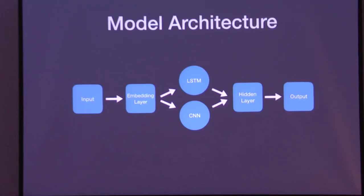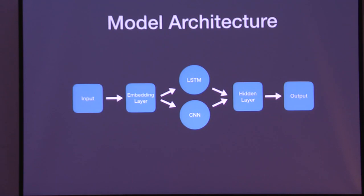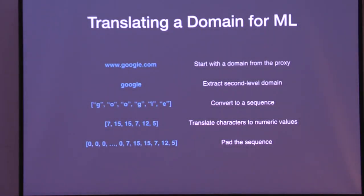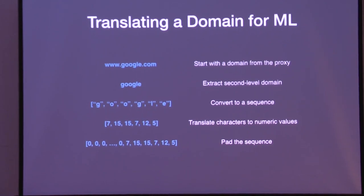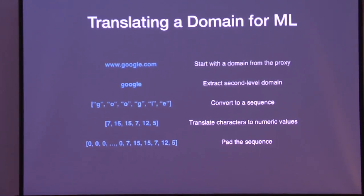Our final model takes a domain and outputs a probability of it being a dictionary DGA. For the input: deep learning is a lot of linear algebra, so we need the input translated into a fixed-size matrix. We start off with our URL, extract the important bit — the second level domain name — and convert it into a sequence of characters, then a sequence of numbers because you need numbers to multiply matrices. We then pad it so they're all the same length — a bunch of zeros in front until they're all 63 characters. Then we go on to embedding.